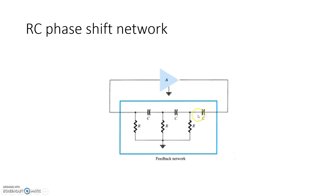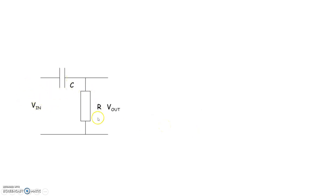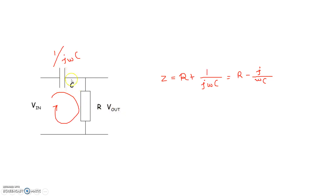Consider one RC section. The output is first given to the capacitor, and the voltage is taken across the resistor. This is supplied to the next RC section, and so on. Basically, the input is provided to the capacitor and the output is taken across the resistor. In this circuit, V_input is the output of the amplifier and V_output is the feedback voltage.